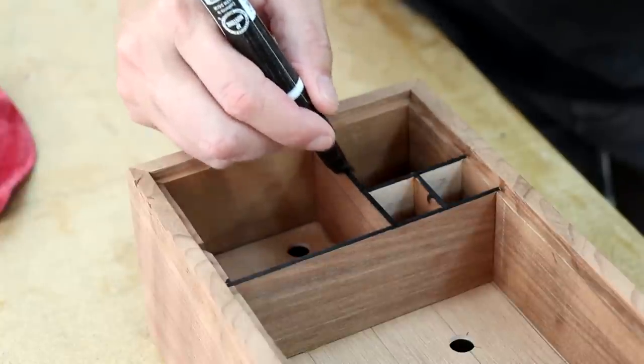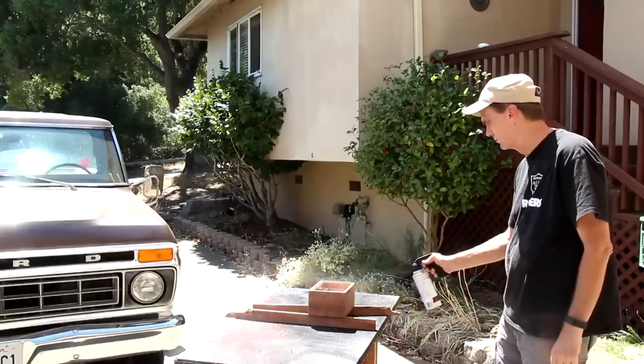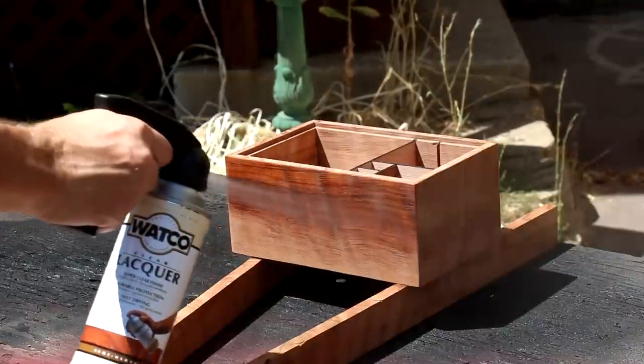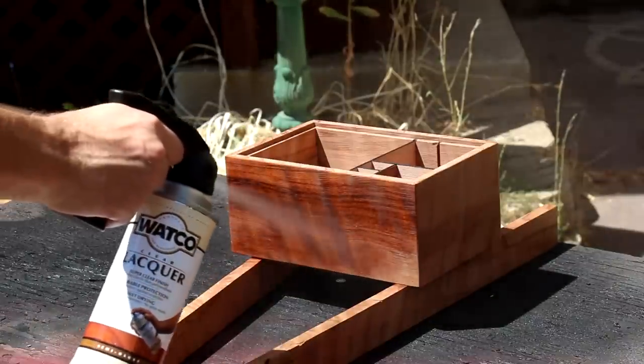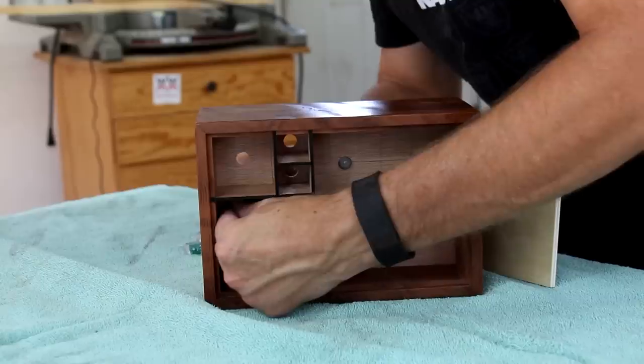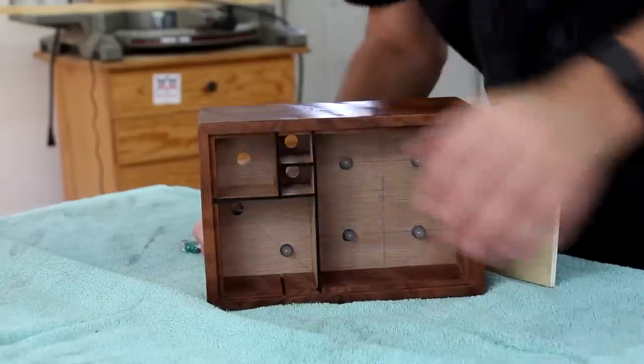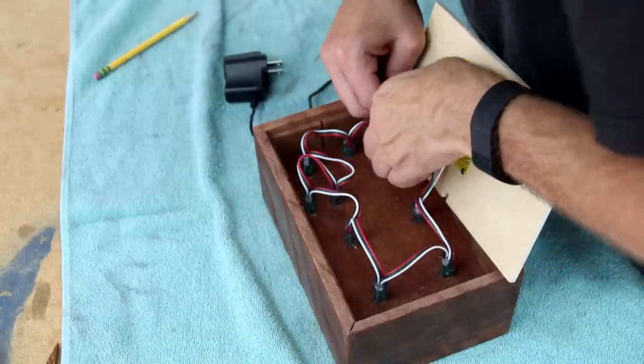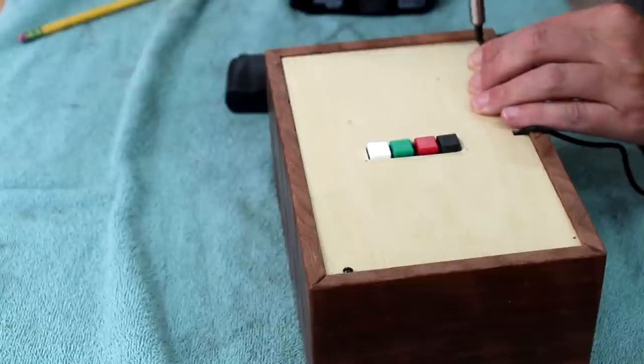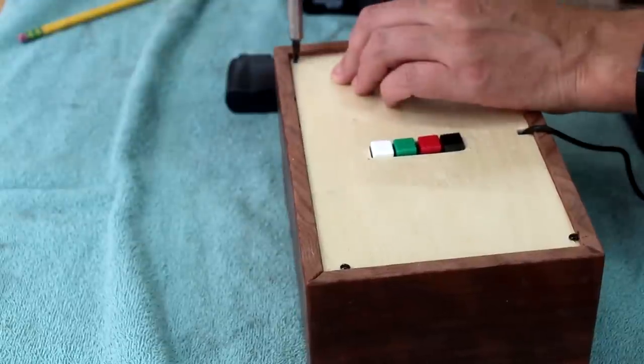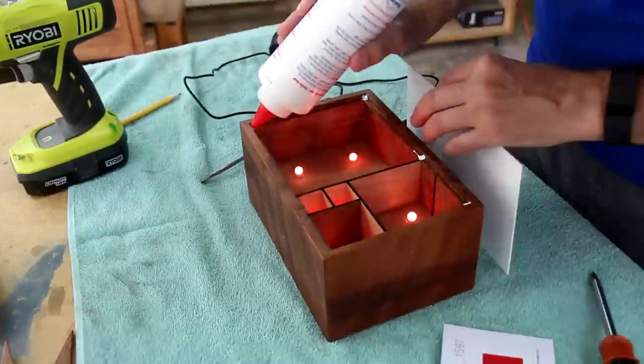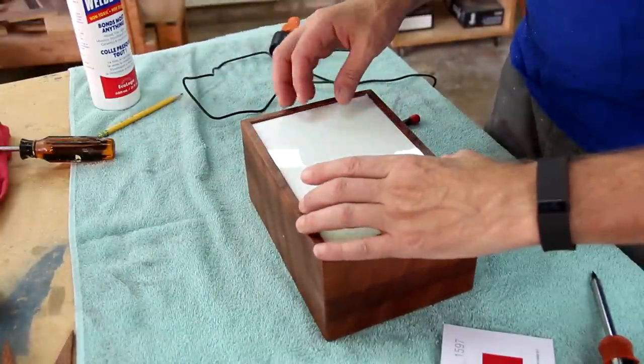I'm going to cover these edges with a black marker. I'll finish this with spray lacquer. Now I can put the lights in. I'm going to glue this acrylic panel into place with just a couple of spots of glue.